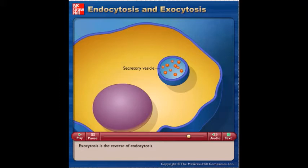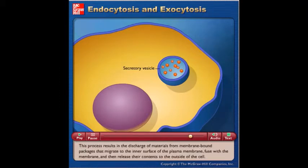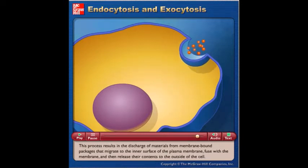Exocytosis is the reverse of endocytosis. This process results in the discharge of materials from membrane-bound packages that migrate to the inner surface of the plasma membrane, fuse with the membrane, and then release their contents to the outside of the cell.